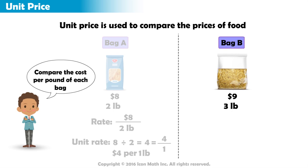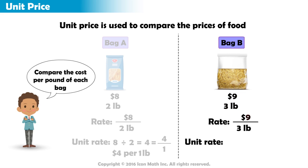Bag B costs $9 for 3 pounds, so the rate is 9 thirds. To find the unit rate, we will divide the numerator, 9, by the denominator, 3. 9 divided by 3 equals 3, or 3 over 1.